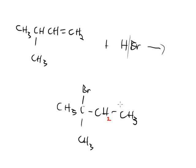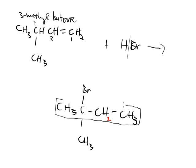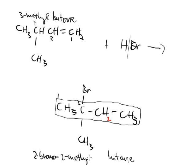We bring in the bromine, which attacks that positive charge, and the bromine goes on at that spot. There's the product. Up at the top, we can name the alkene: the longest carbon chain including the double bond is one, two, three, four — that's a butene at carbon one. At carbon three there's a methyl group, so this is 3-methylbutene. The product is 2-bromo-2-methylbutane.